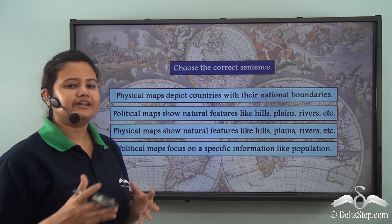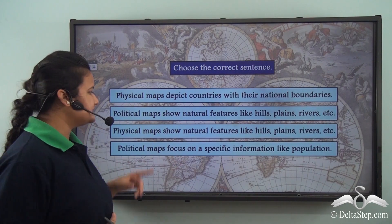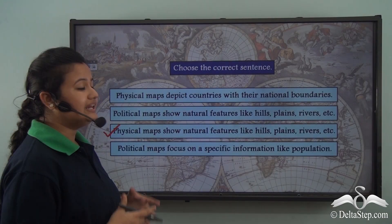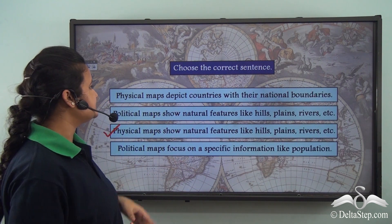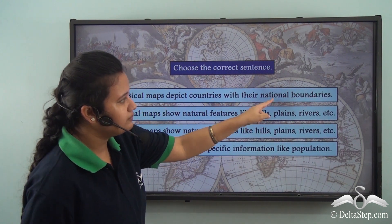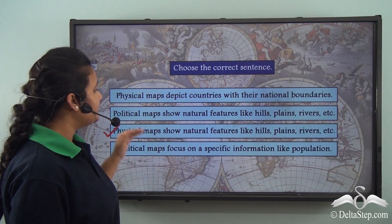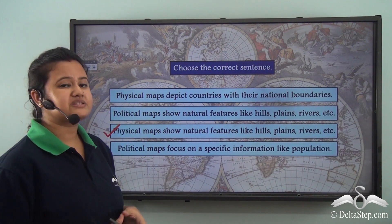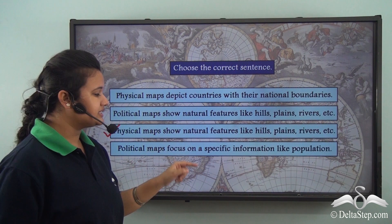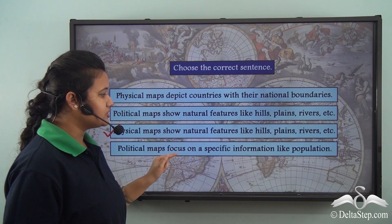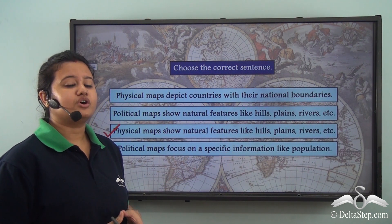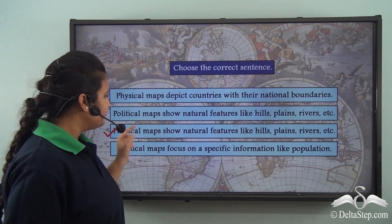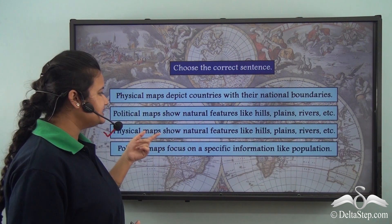Which of these statements do you think is correct? The correct statement is the third one, which says physical maps show natural features like hills, plains, rivers etc. The first option is incorrect because physical maps do not depict countries with national boundaries. The second is incorrect because political maps define political divisions, not natural features. The fourth is also incorrect because maps that focus on specific information are called thematic maps, not political maps.